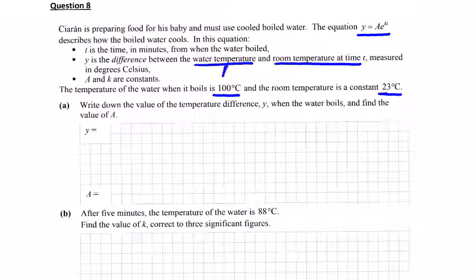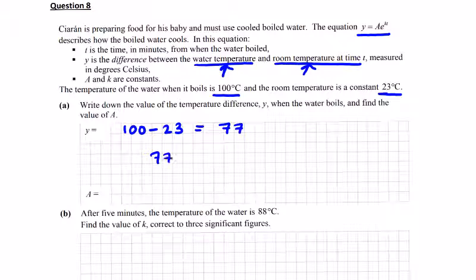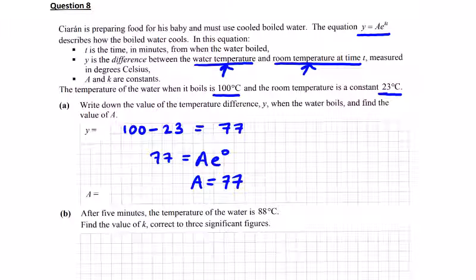So you're told here the difference between water temperature and room temperature at time T. So water temperature when it's 100, the room temperature is 23, we'll give it to Y, 77. And then we'll have 77 is equal to Ae to the power of 0, as always. So the initial amount is going to be 77, or A is going to be 77 as well.